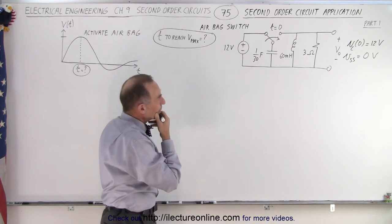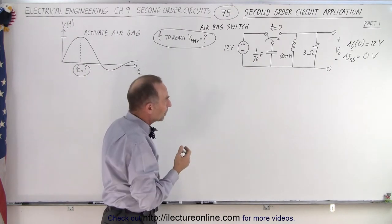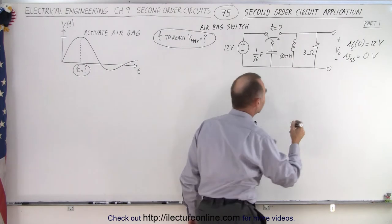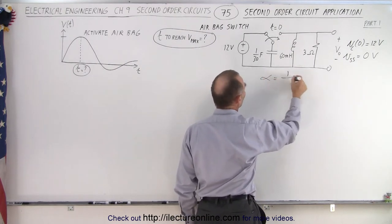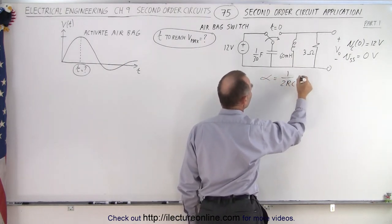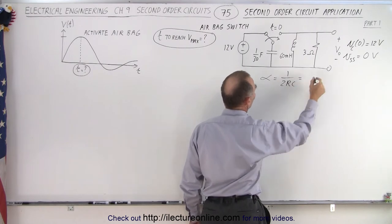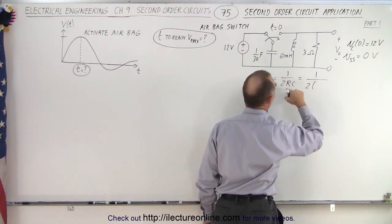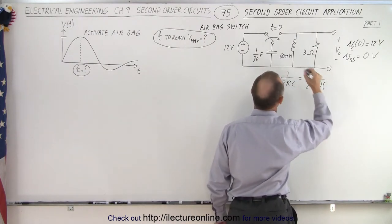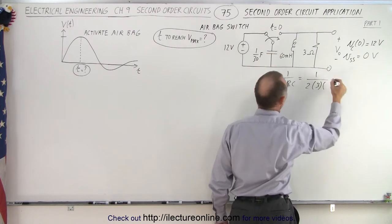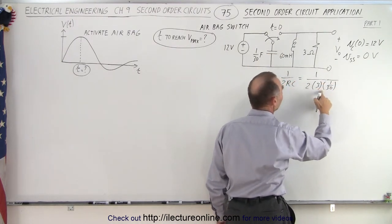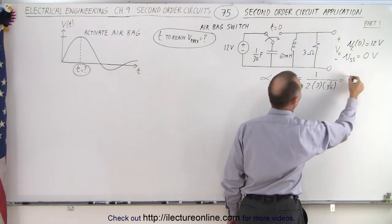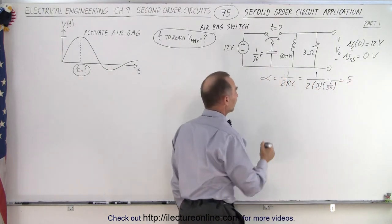Let's set up the circuit by calculating alpha. Alpha is equal to 1 over 2RC. In this case, that's 1 over 2 times R, which is 3 ohms, and C is 1/30 of a farad. Notice that 1/30 times 2 is 1/5 — wait, 3 times 1/30 is 1/10, and 2 times 1/10 is 1/5 — so that gives us a value of 5 for alpha.